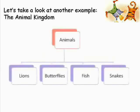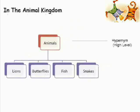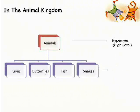The animal kingdom. In the classification table, animals is the name of the group. The name of the group is at the high level — it is also known as a hypernym. In this case, animals is a hypernym of lions, butterflies, fish, and snakes.